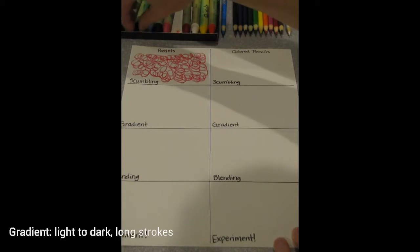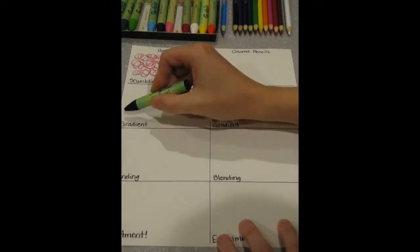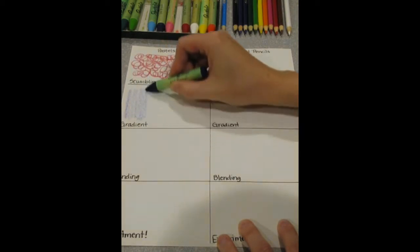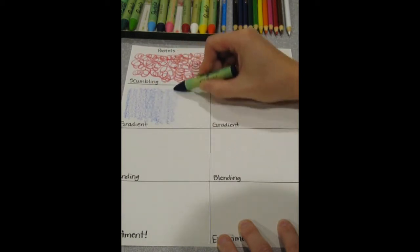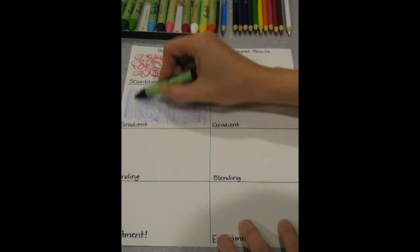As you move on to gradient, gradient is like a value scale which means you are going to be working from light to dark or from dark to light. So I am going to start here on the left pushing very lightly with my pastel, and you can see that I am moving in nice long strokes that almost fill that space.